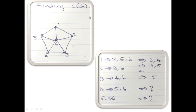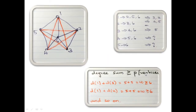Now you can draw the closure using these vertices. One is adjacent to three and four — so draw one adjacent to three and four. Two is adjacent to four and five. Three is adjacent to five. For four and five there are no additional adjacent terms. Now you can check our closure condition.